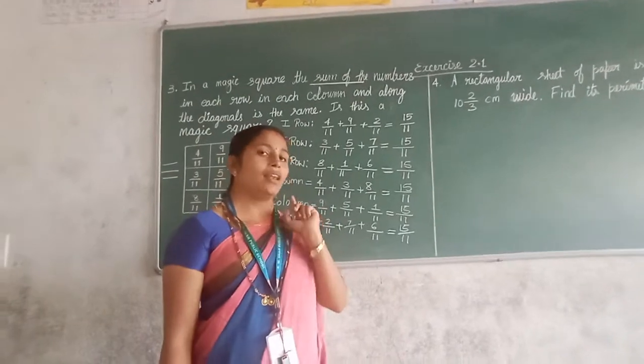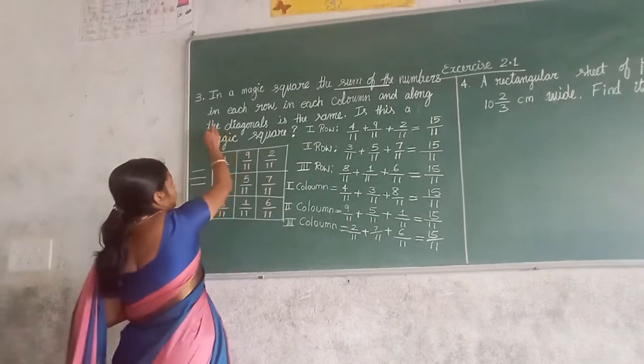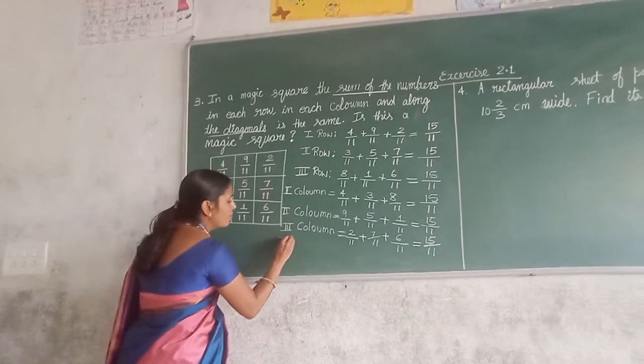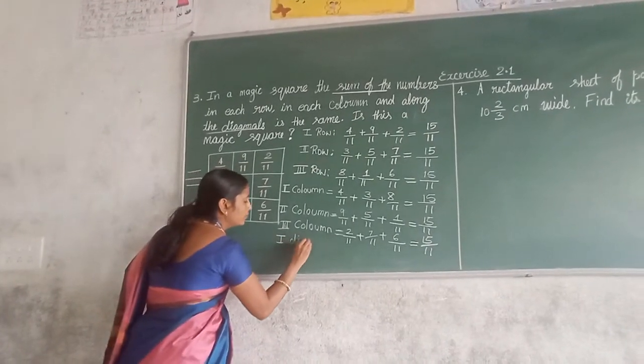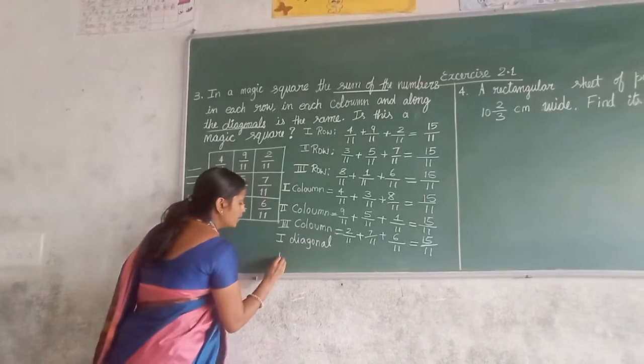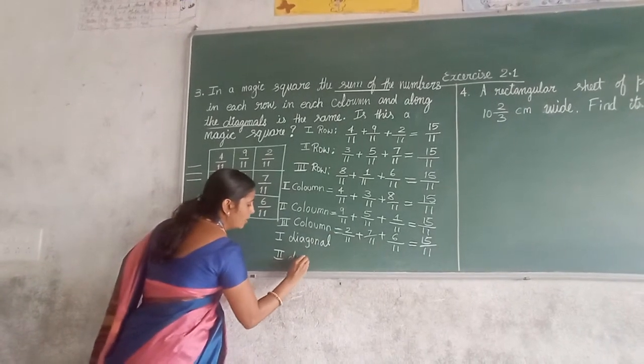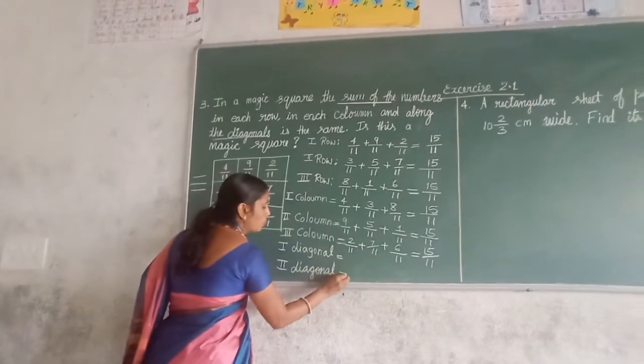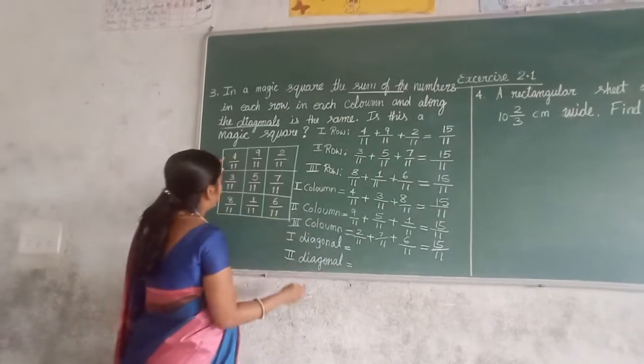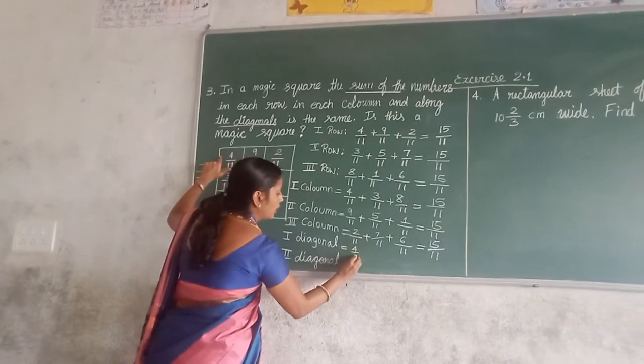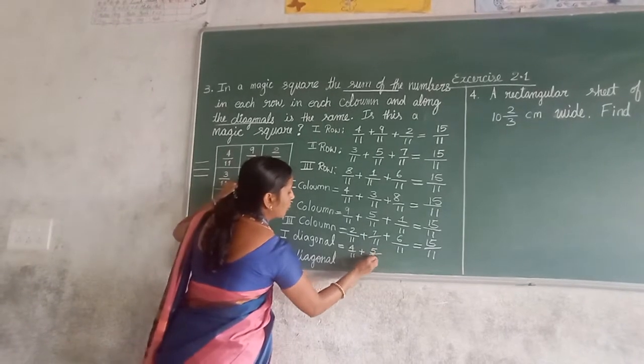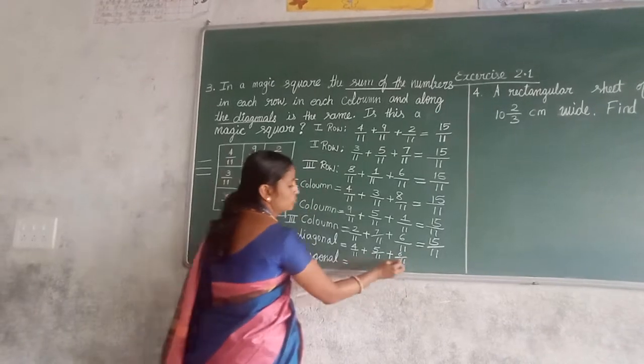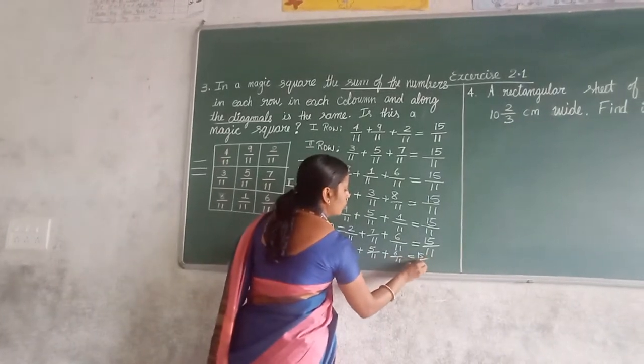But still one step is left out. As they told you, diagonals. Diagonals means slanting. Let us take first diagonal. How many diagonals you can find out? Only 2. So let us go for the 2. First let us take in this way. 4 upon 11 plus 5 upon 11 plus 6 upon 11. 4 plus 5, 9. 9 plus 6, 15 upon 11.